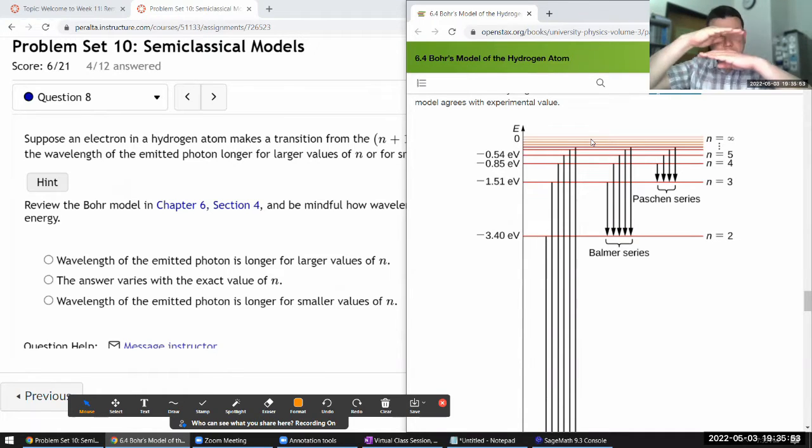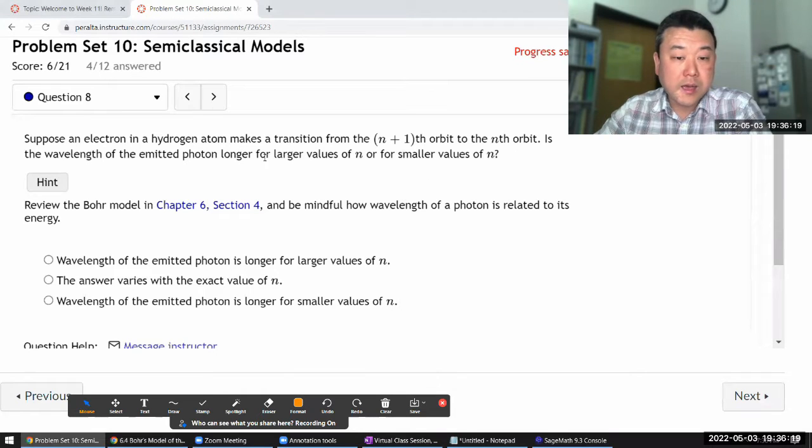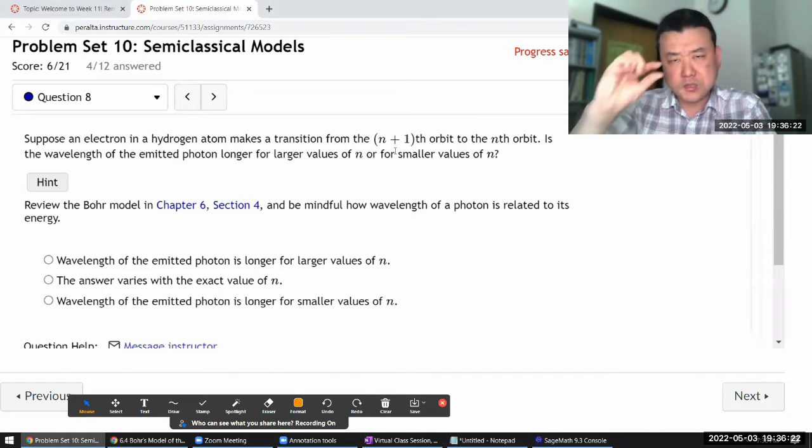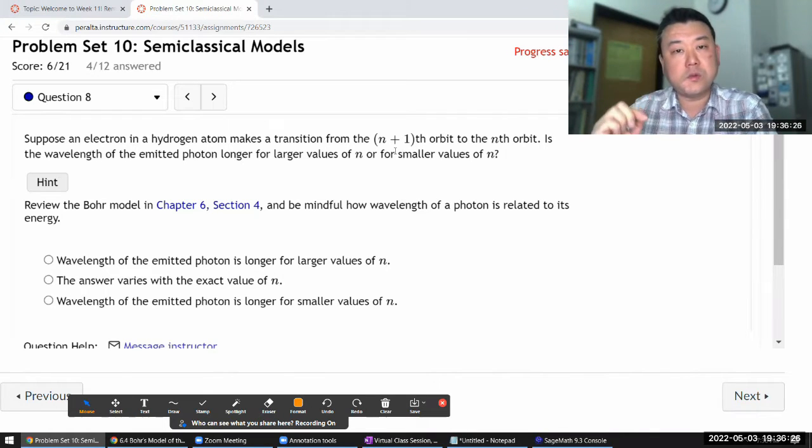smaller and smaller and smaller and this n goes all the way up to infinity where energy will be just at zero, just the barely unbound electron to the proton. And at this limit between the neighboring levels, it's basically, it goes to the continuum limit, where the spacing of energy levels is infinitesimally small. So for the purpose of this question, for the larger values of n, the energy difference will be smaller. So the photon energy will be smaller.